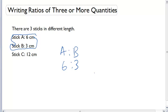We can do two, but we can also do three. What if I said, let's compare now all three of these in one ratio? I could say A to B to C, and I could write 6 to 3 to 12.